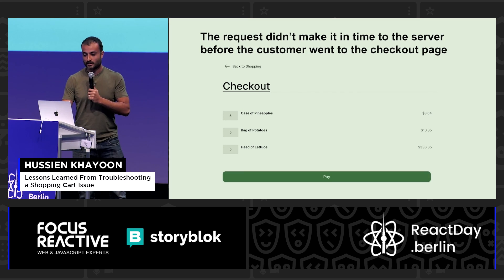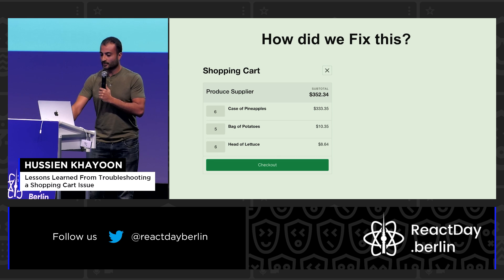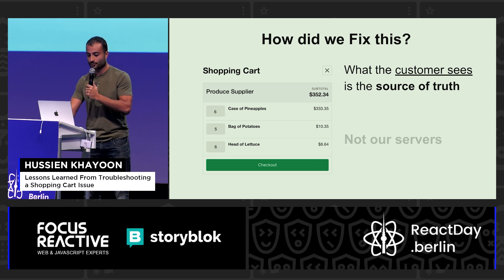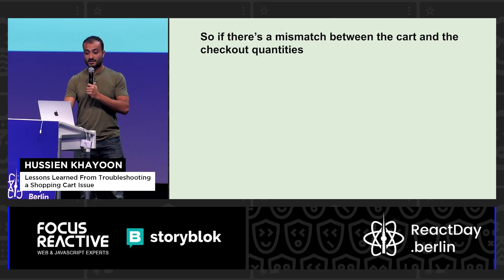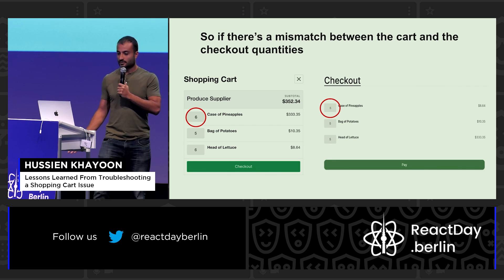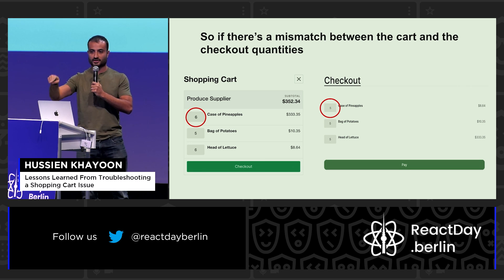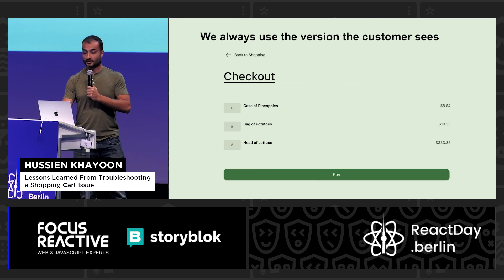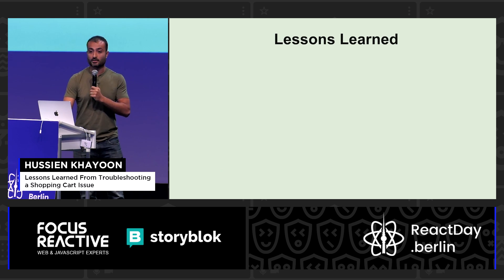So how do we fix it? We knew the update didn't make it in time to the checkout page, which is why you'd see different quantities. What we ended up doing was using what the customer sees at the time of the shopping cart as the source of truth, not the server. If there's a mismatch — say six in the shopping cart and five at checkout — we don't care what the server says; it's what the customer saw. So we'd change it back. That way, the version the customer sees is always what they get. And we never had that problem again.